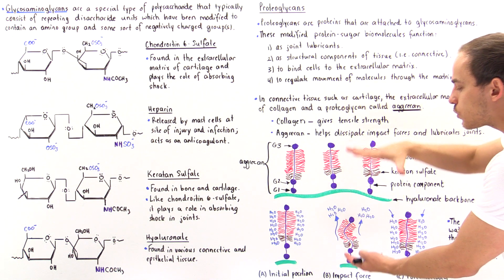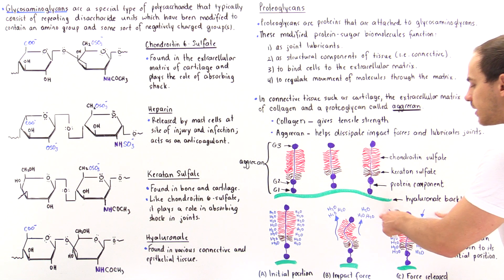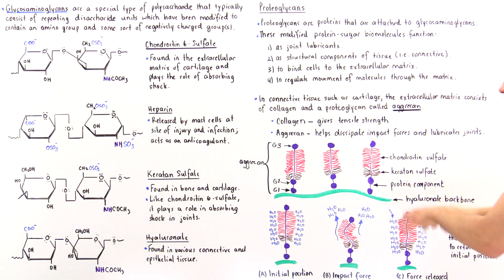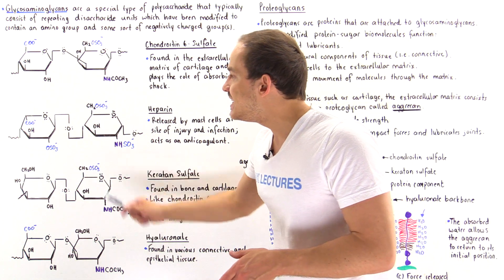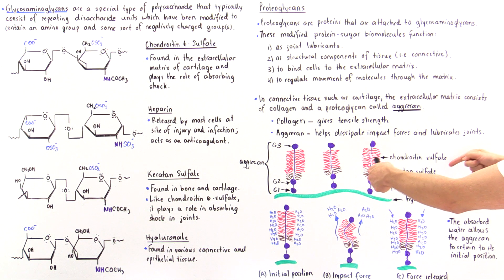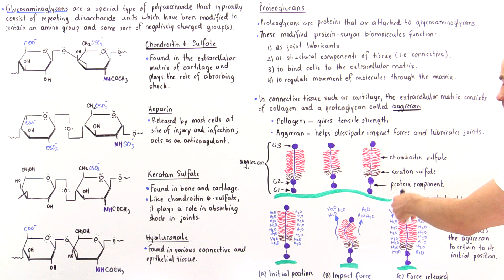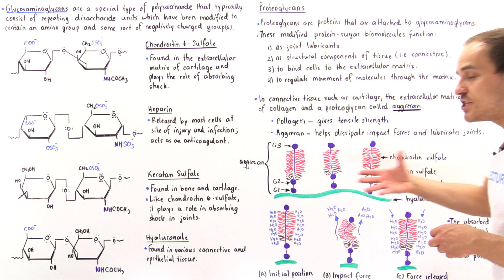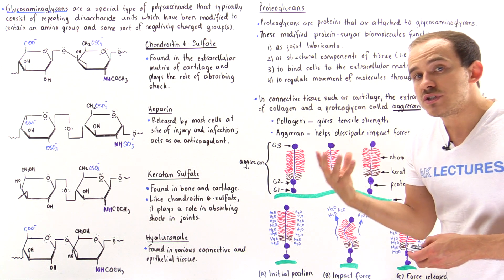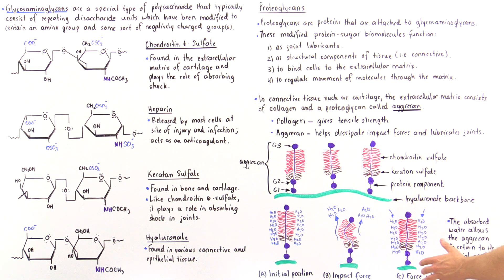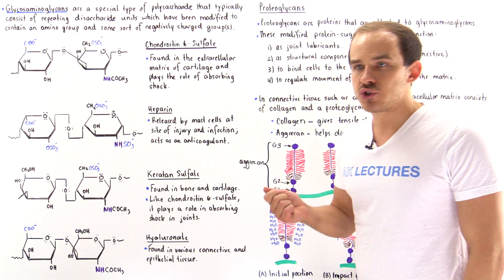As soon as that pressure is released, the water molecules rush right back. Why? Because water tends to move down its concentration gradient from high to low concentration, and the water molecules are attracted to the negatively charged groups on the glycosaminoglycans. Once water is absorbed back into this area, the aggregans spring back into their initial position. Together, this process allows absorption and dissipation of impact forces, prevents damage, and lubricates the joints — which is exactly what happens inside our joints.